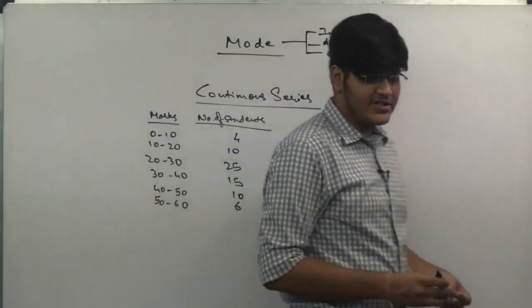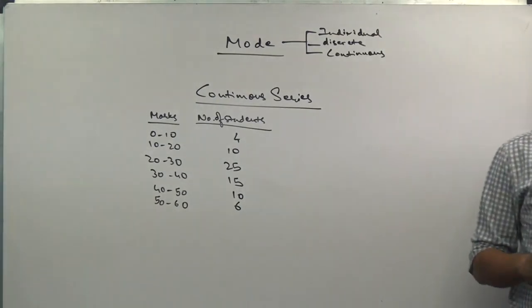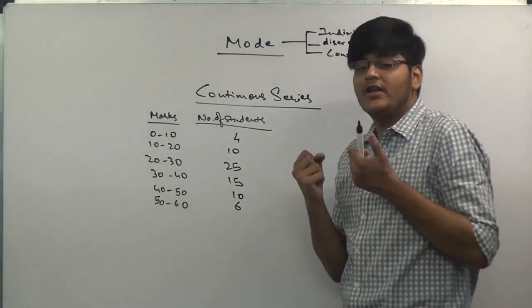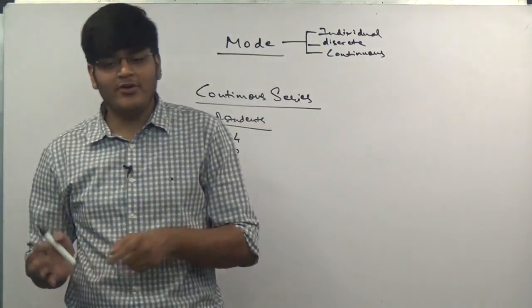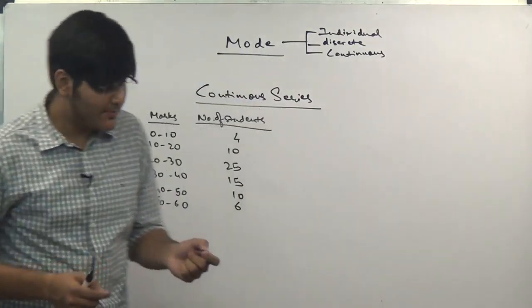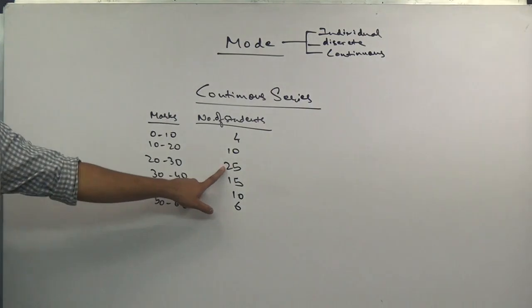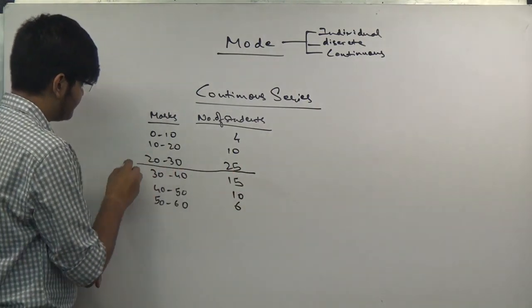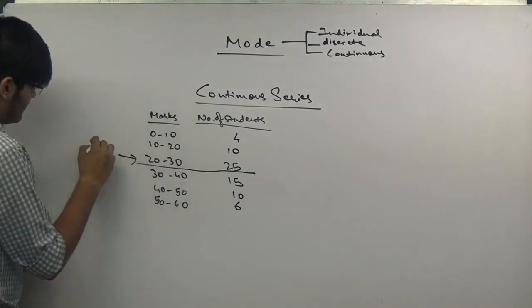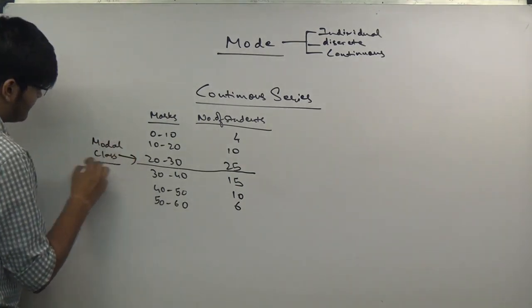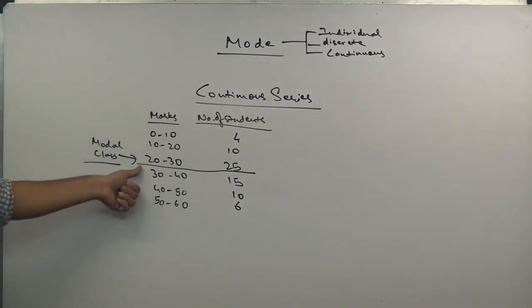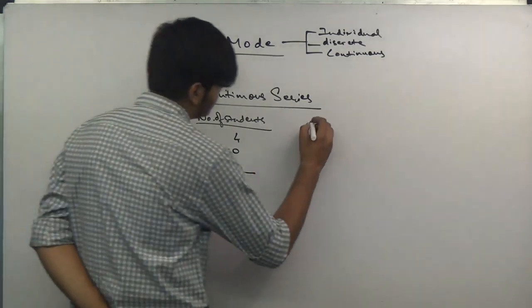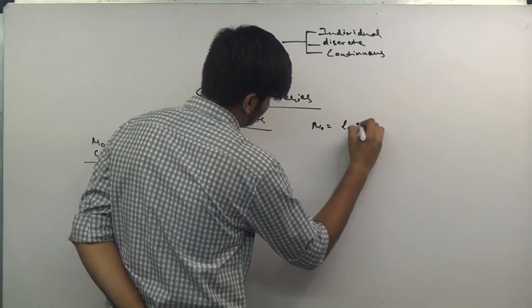After this, how do we select the modal class? I told you the maximum frequency is the modal class. What is the maximum frequency here? 25. So the modal class is 20 to 30. Now we take up the formula: mode equals l1 plus (f1 minus f0) divided by (2f1 minus f0 minus f2) multiplied by i.